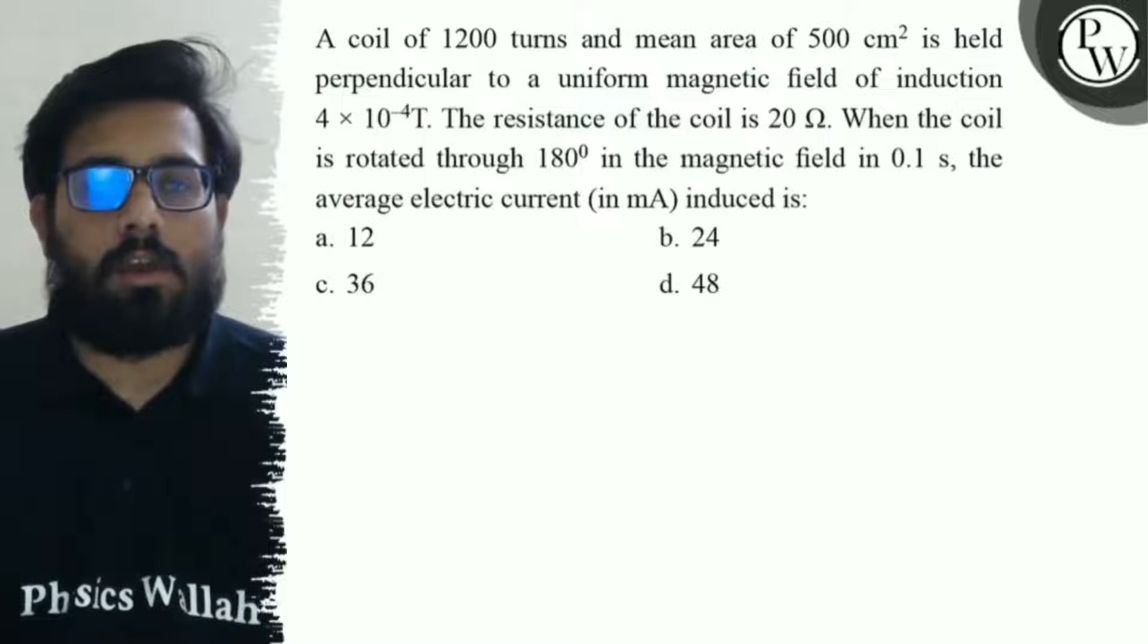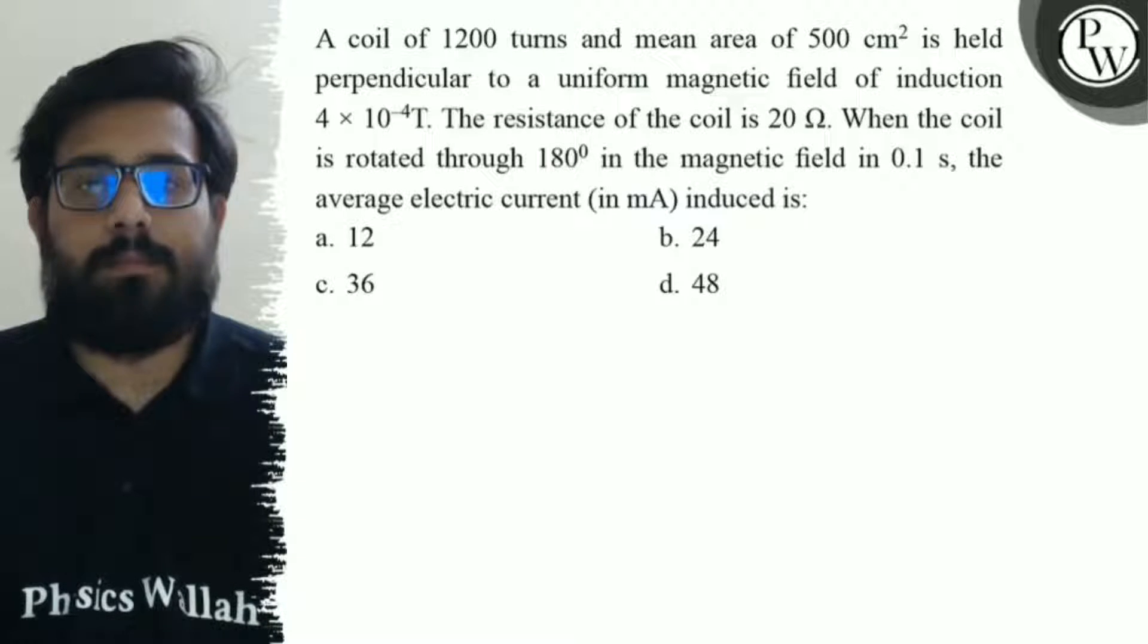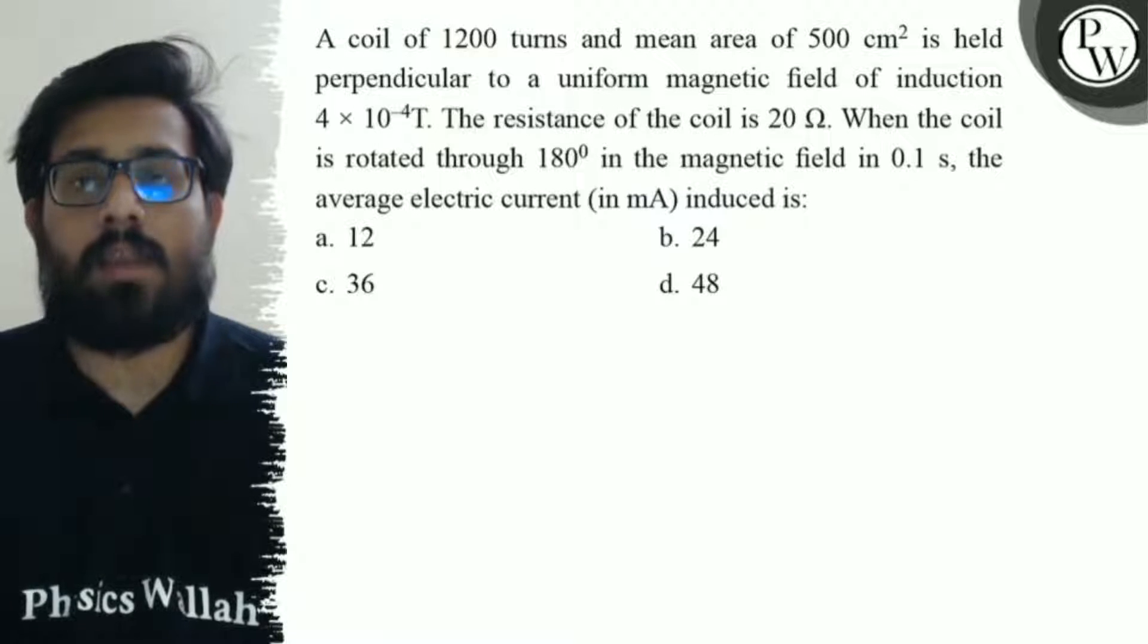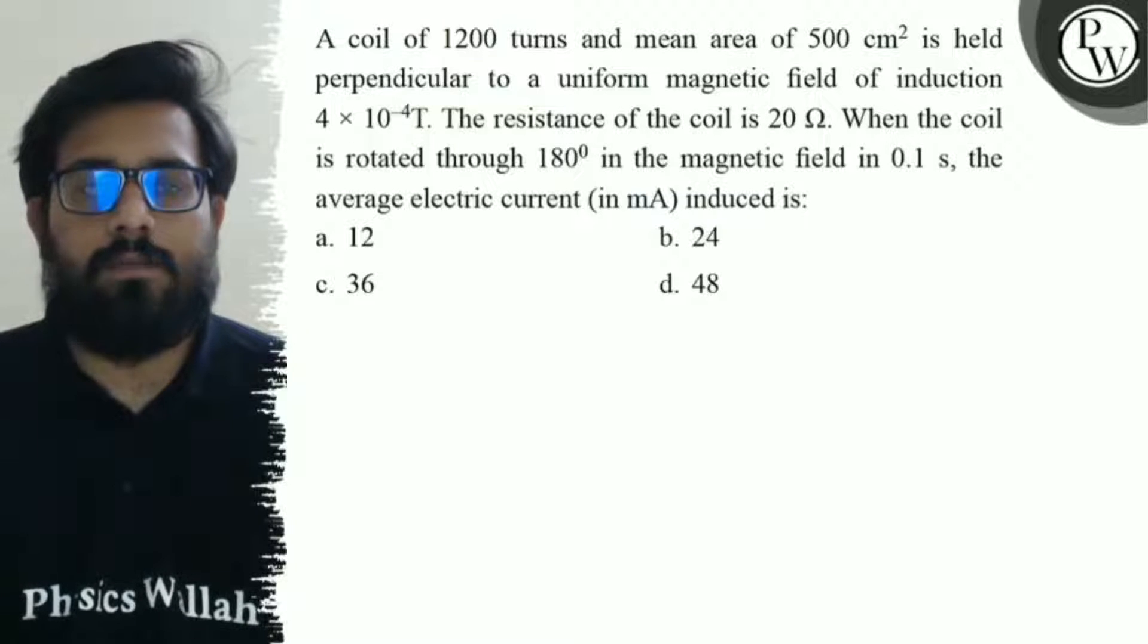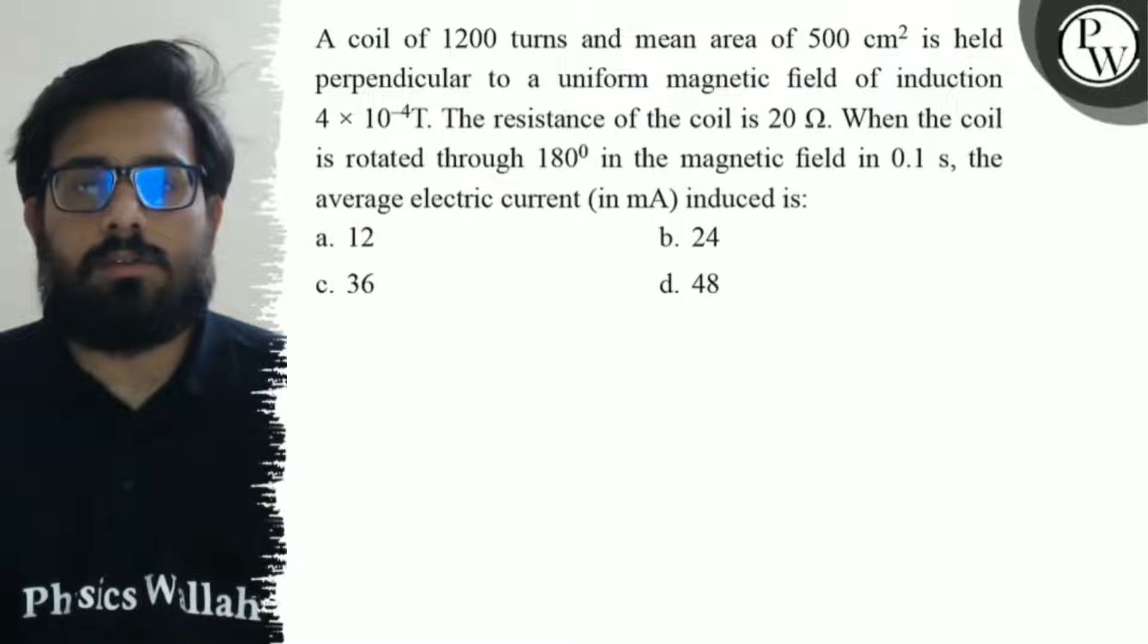Hello viewers, let's see the question. A coil of 1200 turns and mean area of 500 cm² is held perpendicular to a uniform magnetic field of induction 4×10⁻⁴ T. The resistance of the coil is 20 Ω. When the coil is rotated through 180° in the magnetic field in 0.1 second...